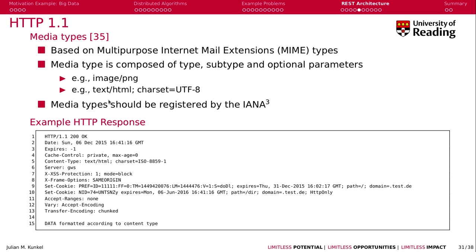Media types are basically a way to specify what type of data is included. For example, you may want to transfer an image in PNG format, or text in HTML format. For text, we also have different character sets we can specify. A media type is composed of a type — such as image or text — a subtype, and additional optional parameters.